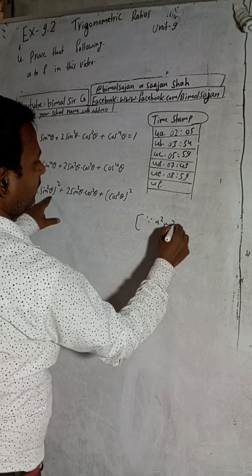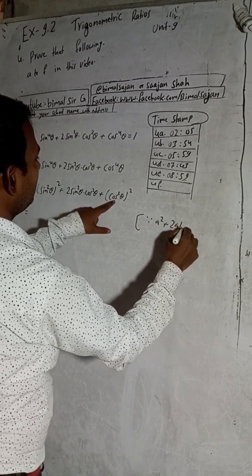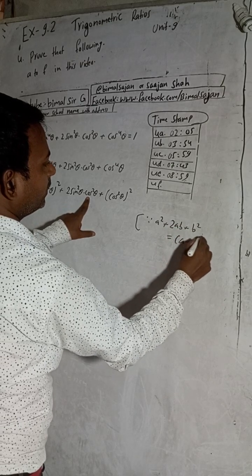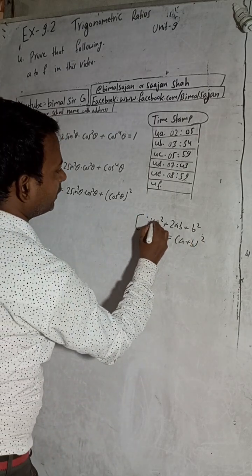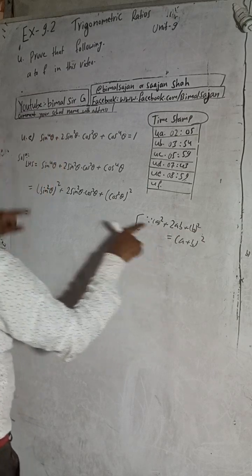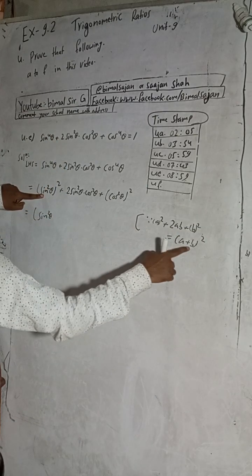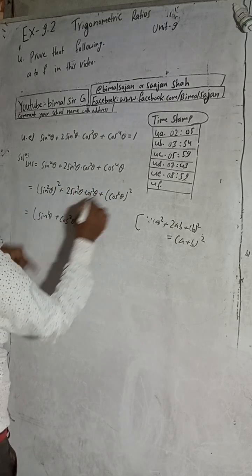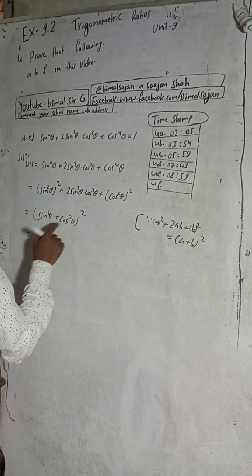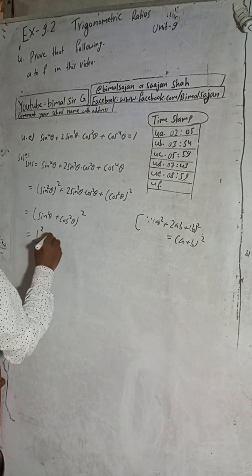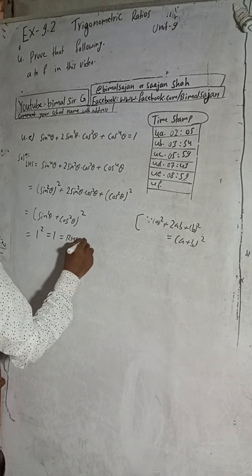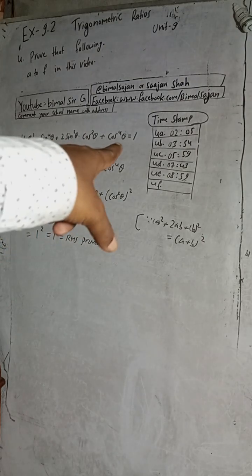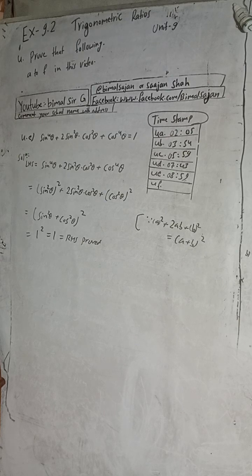This matches the formula (a + b)² where a = sin²θ and b = cos²θ. So it equals (sin²θ + cos²θ)² = 1² = 1, which equals the RHS. This is the solution of question 4e. The timestamp is 8 minutes 59 seconds. I will pause to write question 4f.